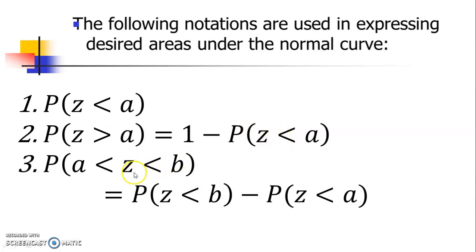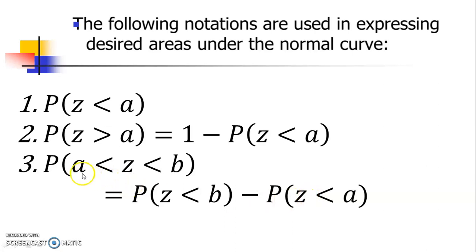If we are dealing with the area in between, where we have an interval between two numbers, and we are looking for the probability between two values where Z is greater than A but less than B, then we use this formula: the probability to the left of B minus the probability to the left of A. So if we have A and B, we get the area to the left of B and the area to the left of A, then subtract the two.